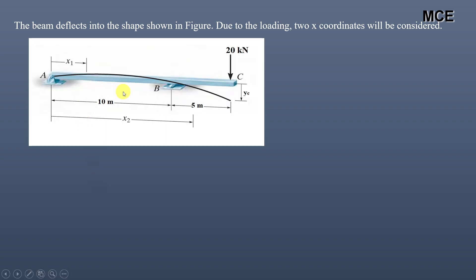The beam deflects in the shape shown in the figure. Due to the loading, we need to take two x-coordinates. The first, x1, is valid in the range 0 to 10 m from A to B, and x2 is valid from 10 to 15 m from B to C. Both are measured from support A.